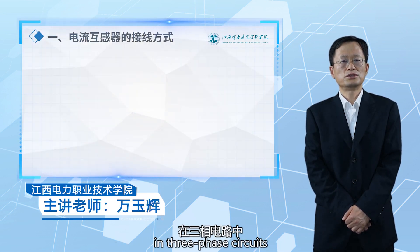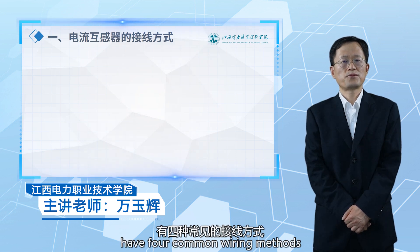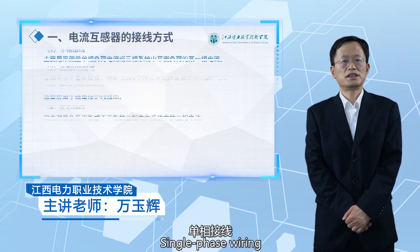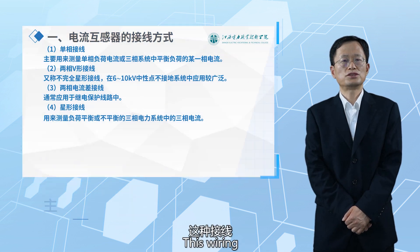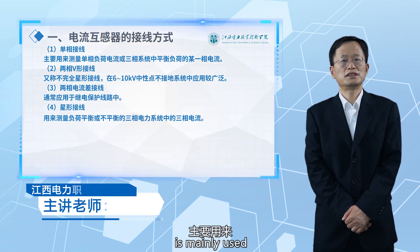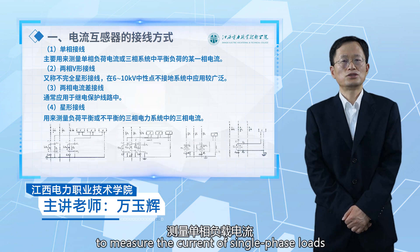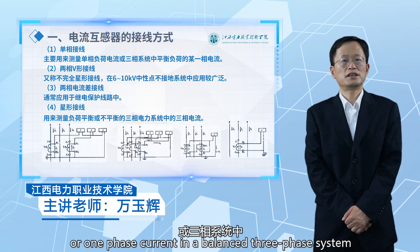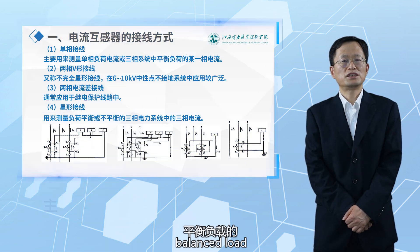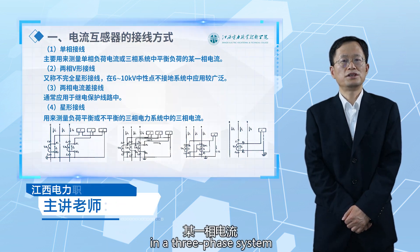Current transformers in three-phase circuits have four common wiring methods. The first is single-phase wiring. This wiring is mainly used to measure the current of a single-phase load or one-phase current in a balanced three-phase system.